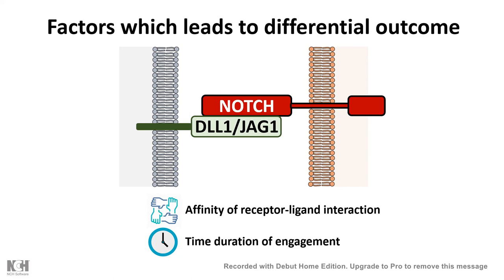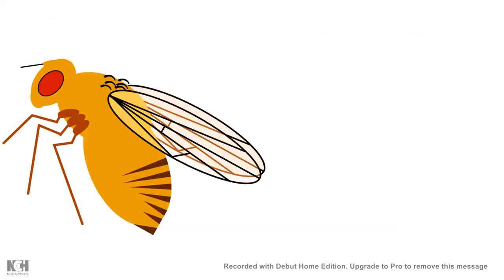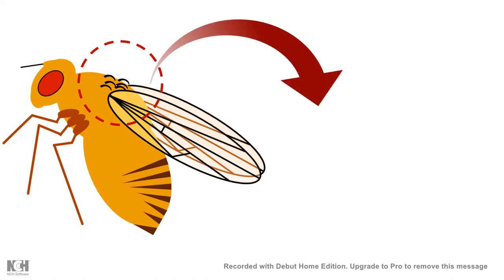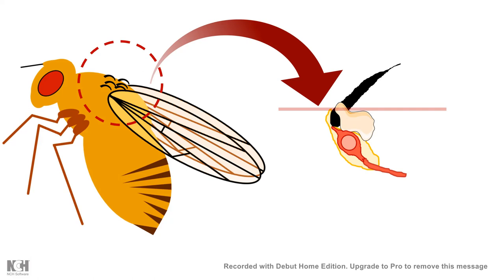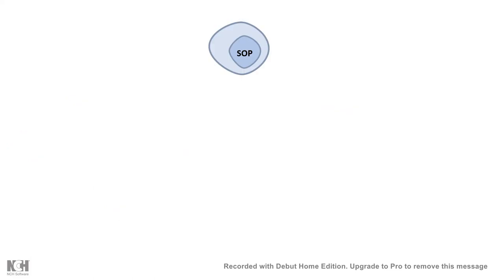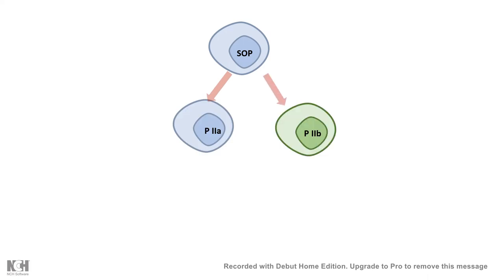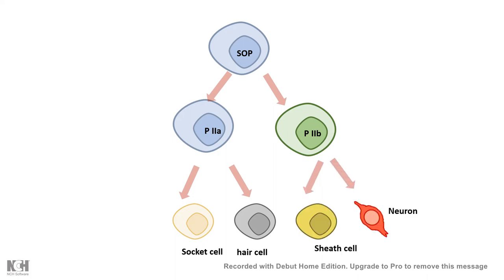To understand this better, let's take a live example from Drosophila. In Drosophila, hairs are known as bristles, and each bristle is actually a combination of four cells: a hair cell, socket cell, sheath cell, and neuron. All four are born from a common sensory organ progenitor, which gives rise to two intermediate progenitors — P2a and P2b — which ultimately give rise to all four cell types. The question is: from one single entity, how can four different identities be produced, and how is Notch signaling involved?